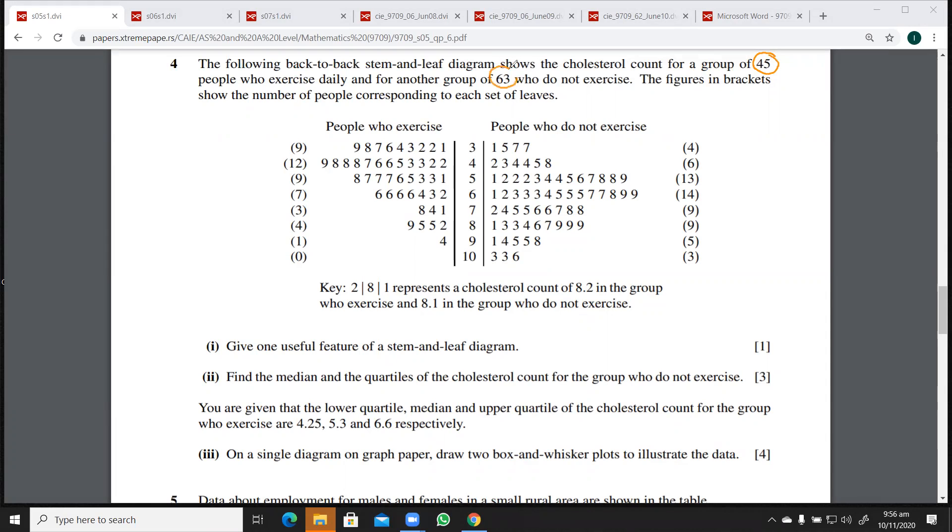So here is the 63. So the sum of all this is 63 and this sum is going to be 45. Now the first question is give one useful feature of a stem and leaf diagram.